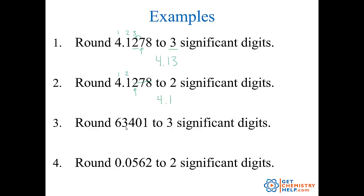How about 63,401 rounded to three significant digits? The six, the three, and the four are significant. The first non-significant digit is this zero, so I round down and keep the six, three, and four. But I can't leave the tens place and ones place empty — 634 is very different from 63,401 — so I put zeros in the tens and ones places, giving 63,400. This is still just three significant figures because trailing zeros are never significant.